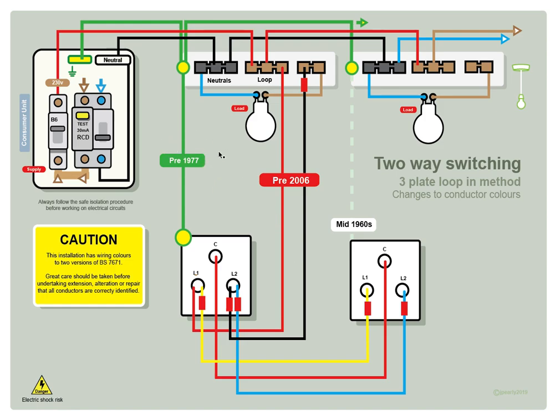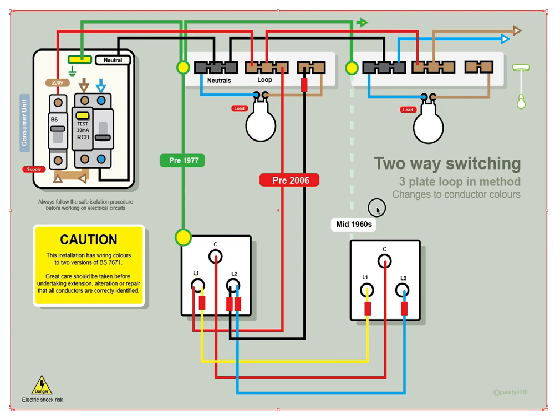And if you go back even further to pre-1977, you might see the CPC is just a solid green sleeving. It's a good way of dating installations, gives you an idea how old it is. You go back even further than that, you might find no CPC whatsoever at the switch. Mid-50s, it was no requirement to earth lighting circuits, so you might find that your switch hasn't got a CPC at all. If that's the case, it's always a good idea to get a CPC to it. What you don't do is you certainly don't put a metal switch plate on or a metal light fitting up, because if there is a fault, there's no protective conductor to take the fault back and operate the protective device.